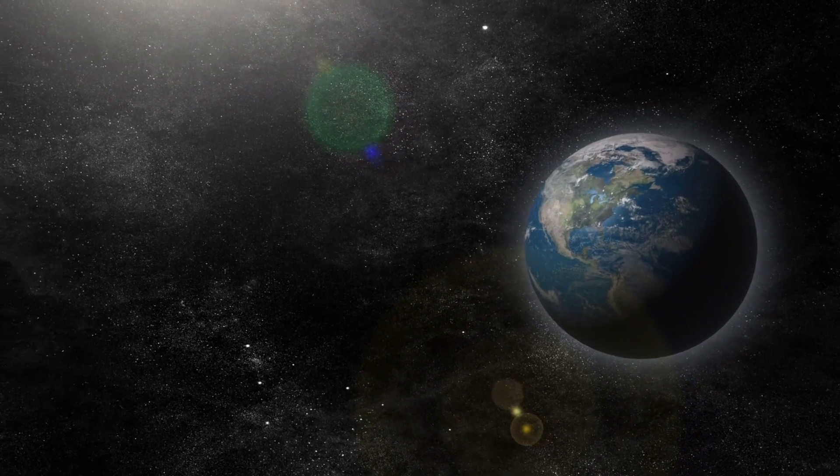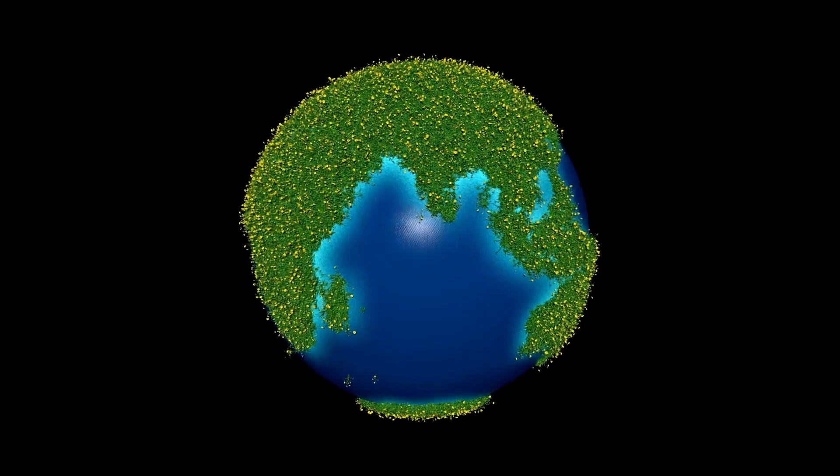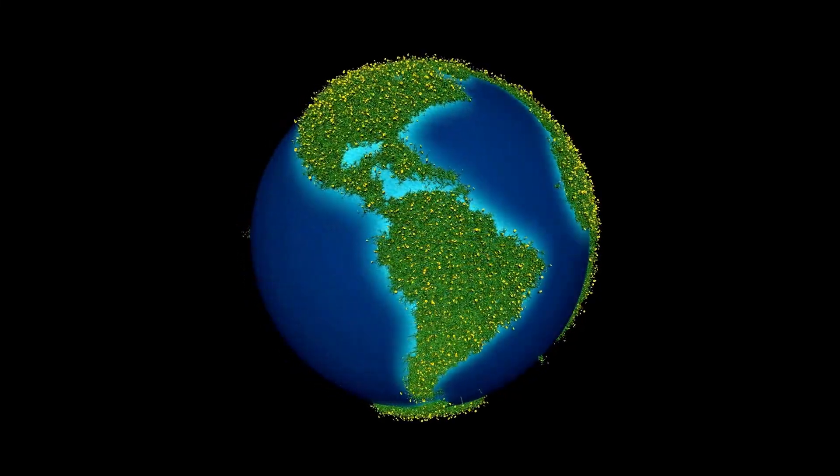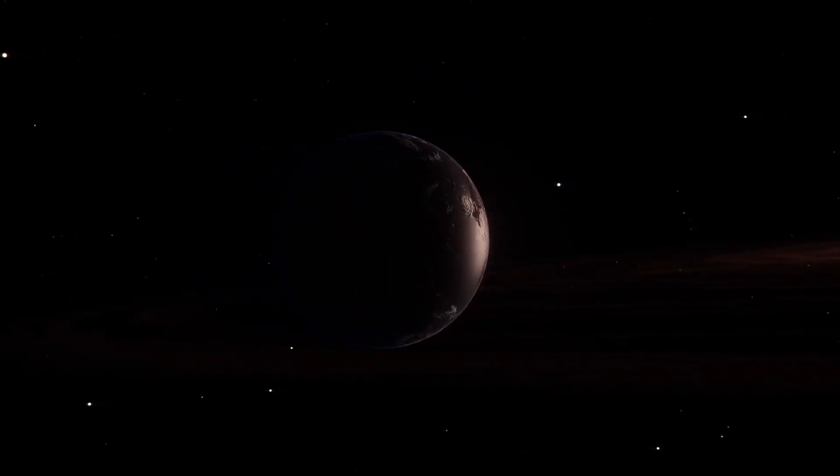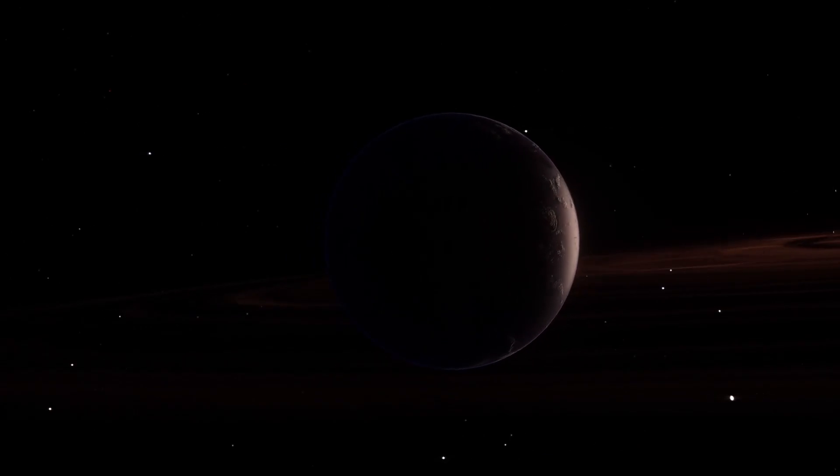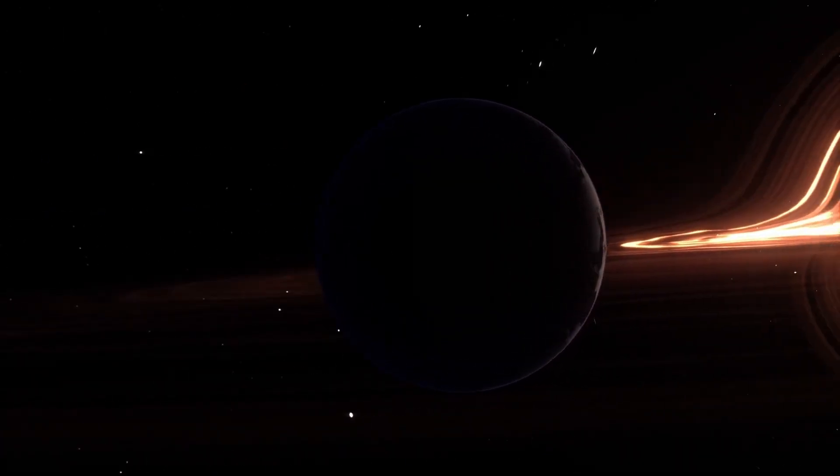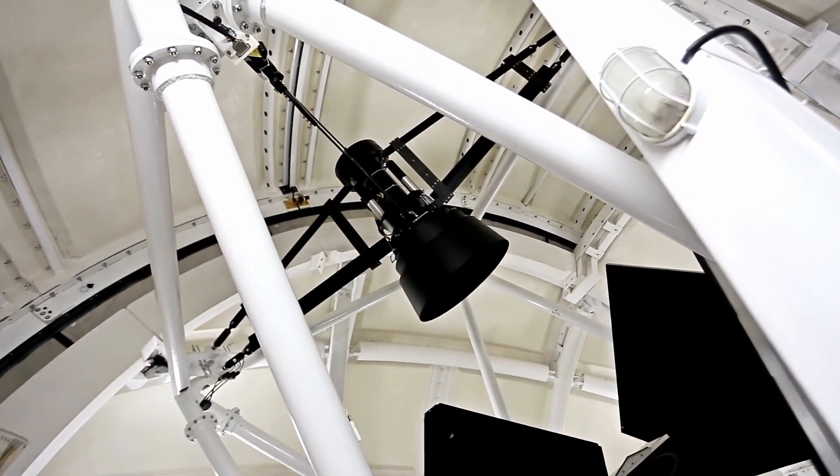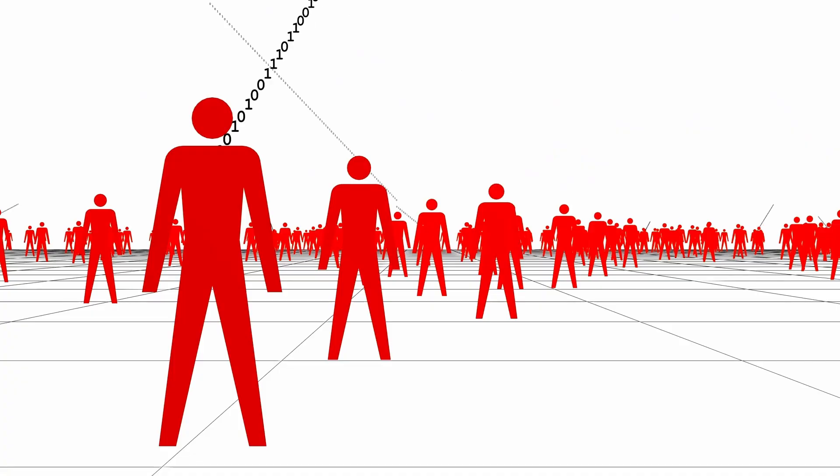For years, this small rocky world existed in the minds of scientists as a distant possibility, detected only through faint signals, tiny wobbles in starlight and subtle dimming events. Now, for the first time in human history, we have a direct, incredibly detailed image of this alien planet.